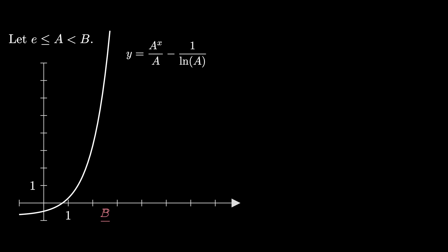Now plot the x coordinate b over a, which is larger than 1, and consider the area under the curve between x equals 1 and x equals b over a, which is a positive area because it lies above the x axis.